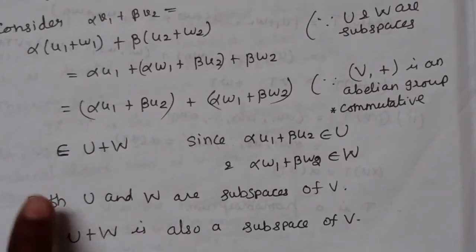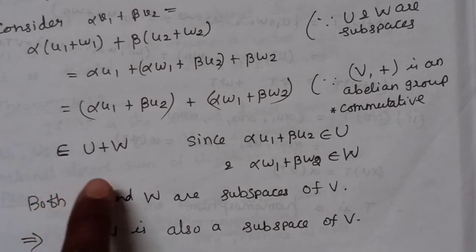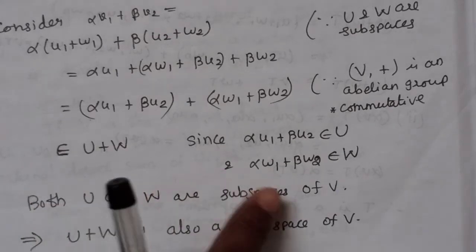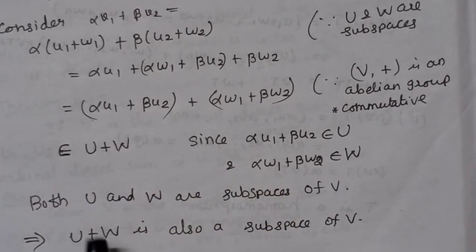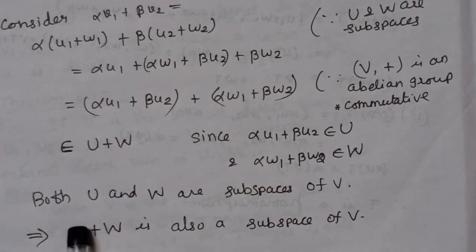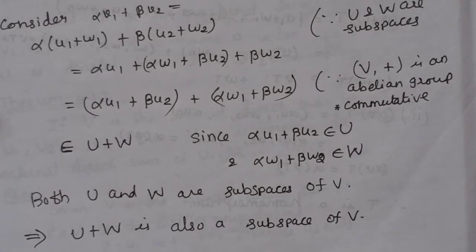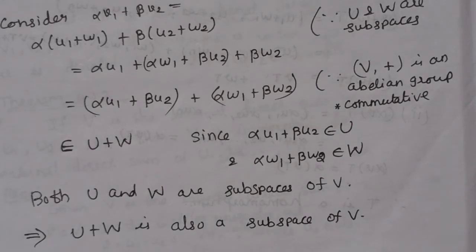Therefore, U plus W is a subspace of V. In the next video, we will cover the intersection of subspaces. Thank you so much.